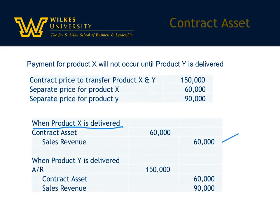There is an asset because of the contract and because they're willing to go forward with it. When product Y is delivered, the $90,000 in sales revenue for product Y is recorded. Contract assets is then credited because the contract has been completed, and accounts receivable is debited for the full $150,000, because the entire contract has now been earned and they're entitled to that amount.